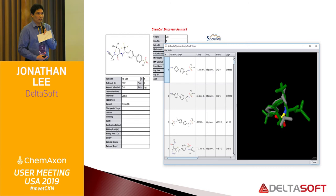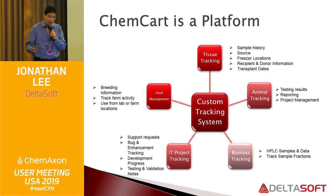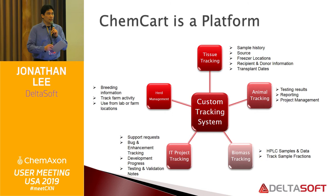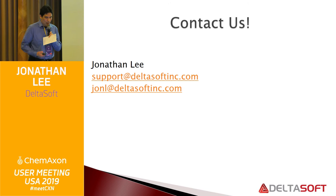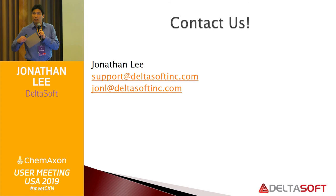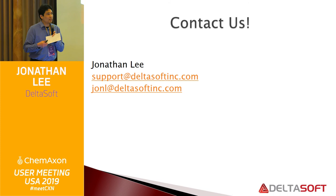To wrap up — ChemCart is a platform, not necessarily tied directly to cheminformatics. We use it for IT project tracking and bug tracking as well. Other companies use our product for herd management and tracking of things like tissues, animals, or biomass. I hope I've shown you that the partnership of Deltasoft and ChemAxon is important for you as a customer, because you're going to get the power from both companies. If you have any questions or want to know more, you can come see me after. Thank you.